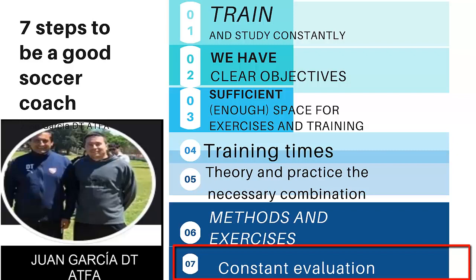Constant evaluation: the coach must evaluate whether the soccer players improve in performance. If they do, it means the method adapts to the players and must be reinforced. If the soccer players do not improve, the coach must seriously rethink and evaluate new strategies or methods, since the final objective of training should be to improve the soccer players in physical, technical, and tactical aspects.